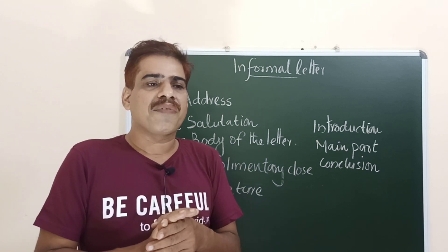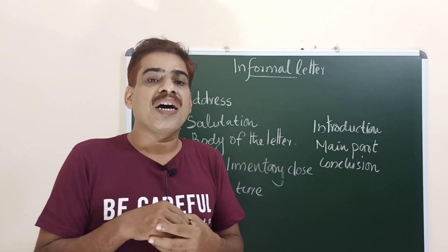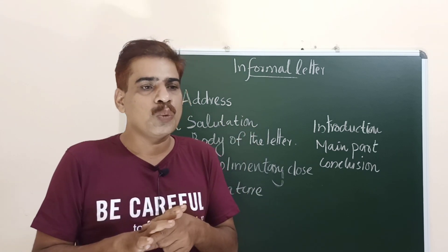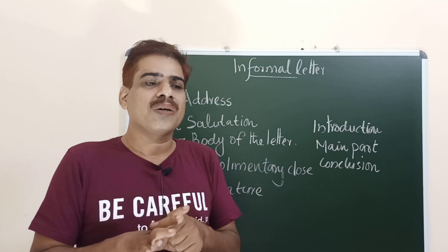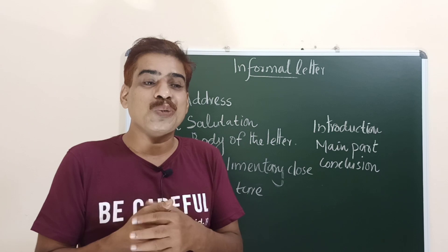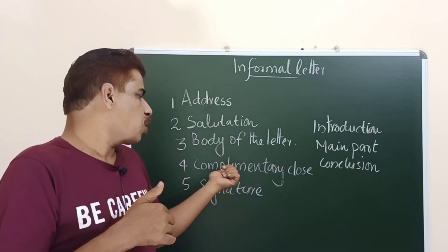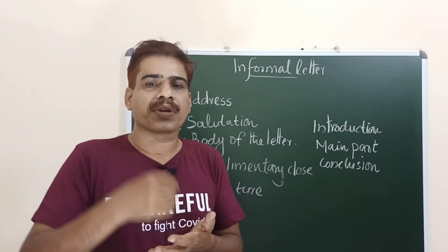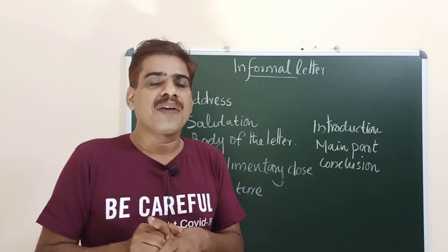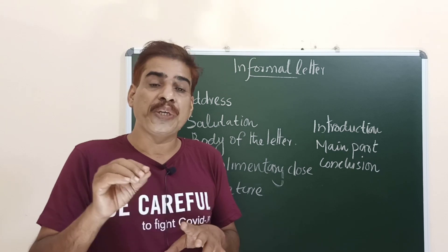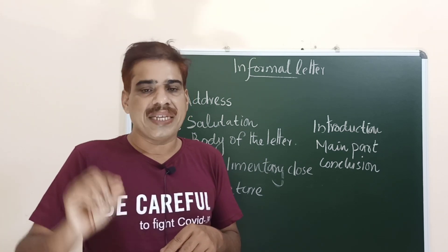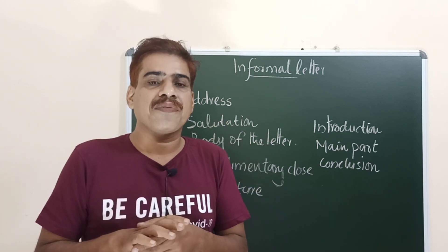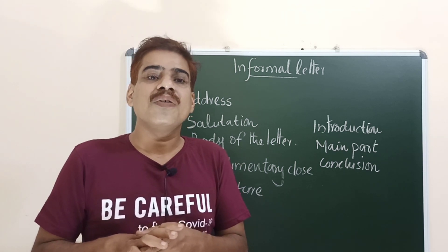If you want to convey regards, that goes in the complimentary close. You can write: 'Convey my love to all,' 'Convey my best regards at home,' 'I shall come to see you soon,' or 'Hope to meet you soon.' The last part is the signature. If you are writing to family, write 'Yours affectionately.' To friends, write 'Yours lovingly.' There should not be an apostrophe after 'yours.' Then write your name, and your letter is complete. In the next part, we will learn how to write an effective letter with a specific model.